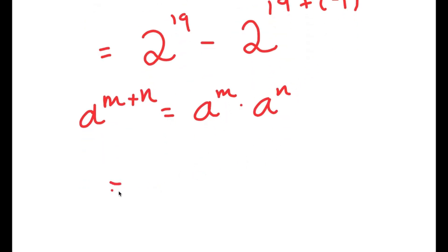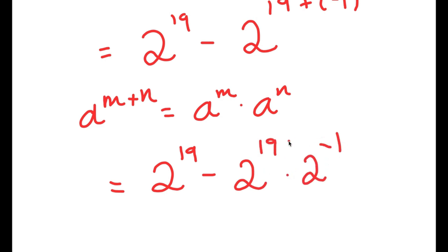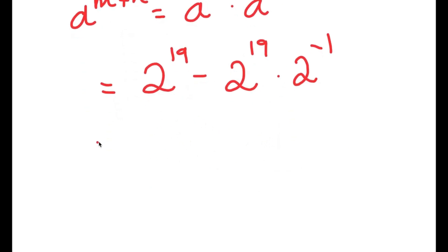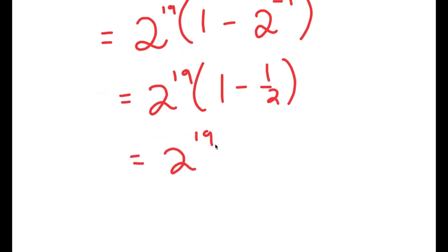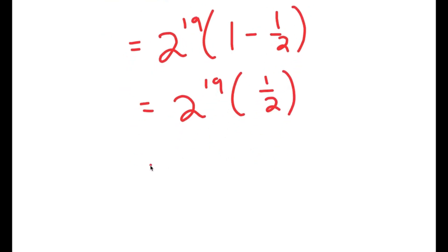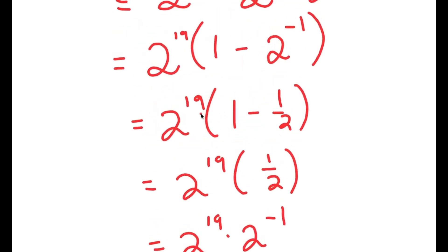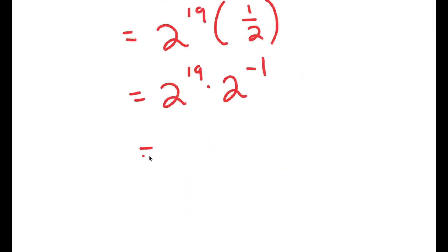So 2 to the power of 19 plus negative 1 equals 2 to the power of 19 times 2 to the power of negative 1. From here, the greatest common factor is 2 to the power of 19. So I get 2 to the power of 19 times (1 minus 2 to the power of negative 1), which equals 2 to the power of 19 times (1 minus 1/2), which equals 2 to the power of 19 times 1/2. Since 1/2 is 2 to the power of negative 1, this equals 2 to the power of 19 times 2 to the power of negative 1, which equals 2 to the power of 18.